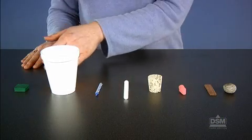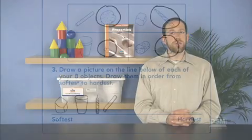If students can't agree on the order, suggest scratching the objects against each other to determine which object is softer and which object is harder. Have the students record their results in Question 3 of their activity sheets.